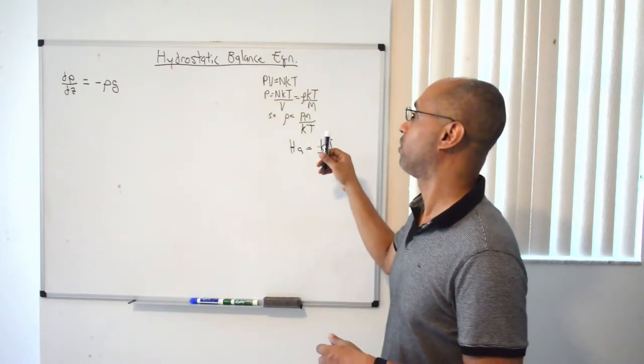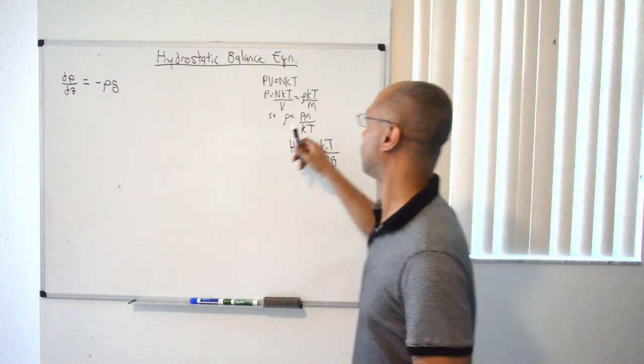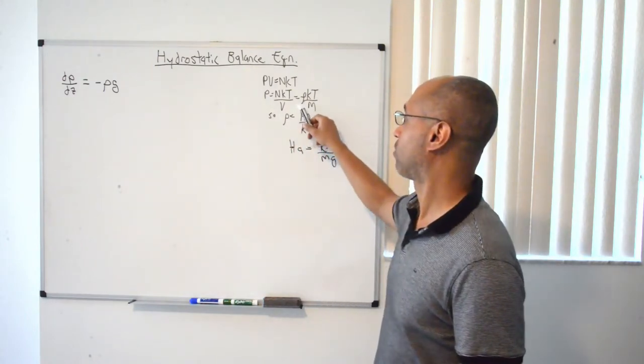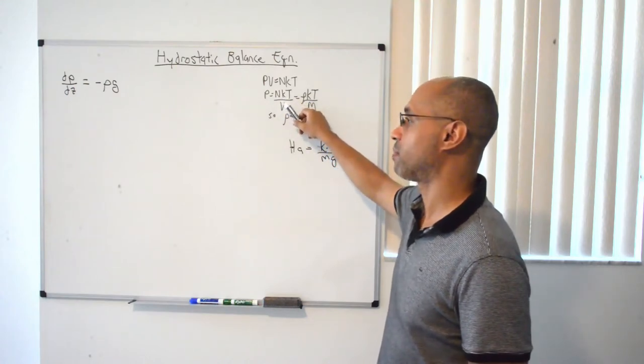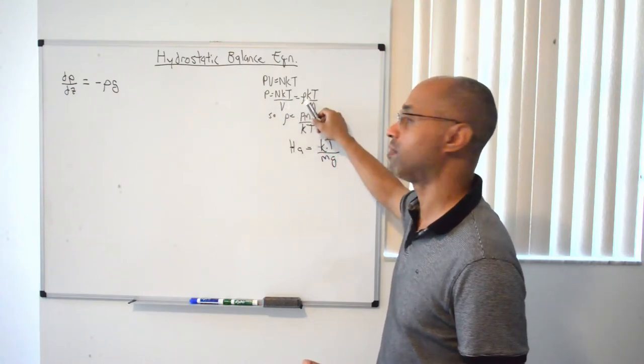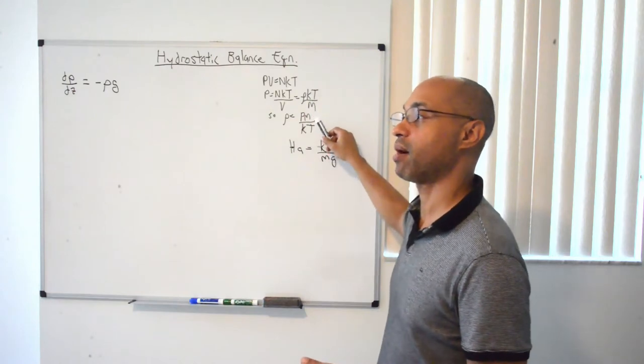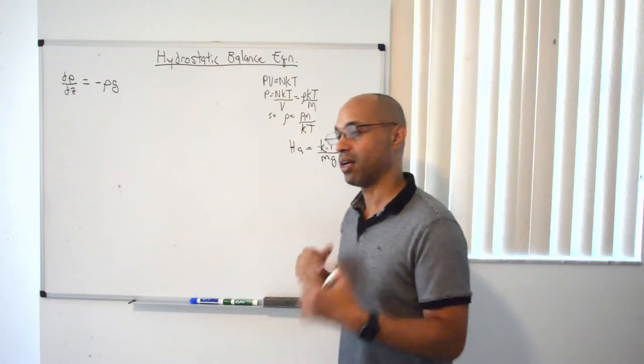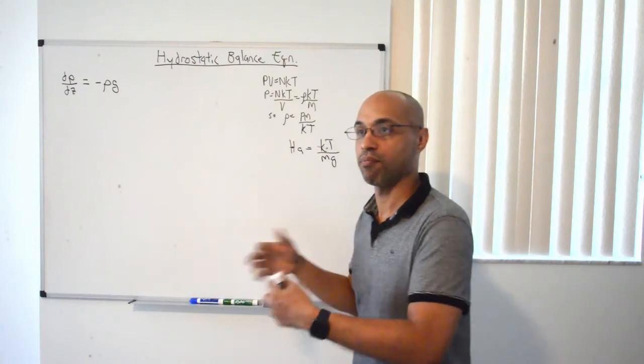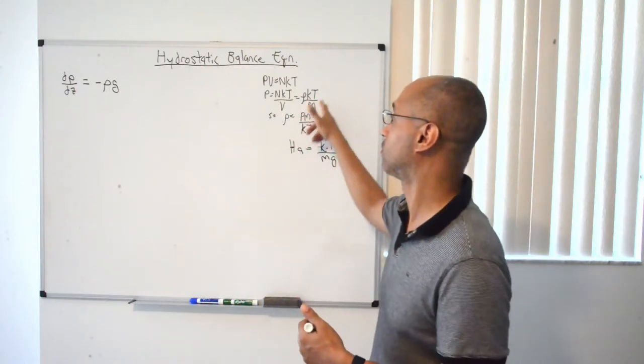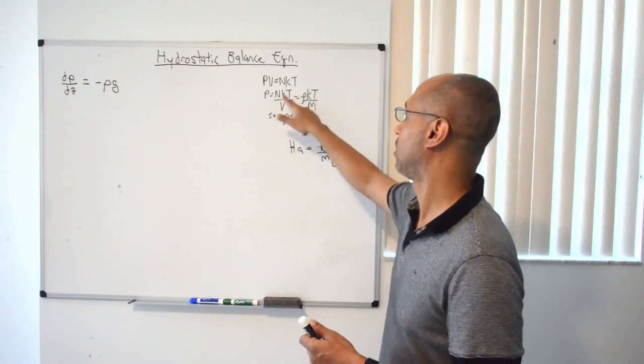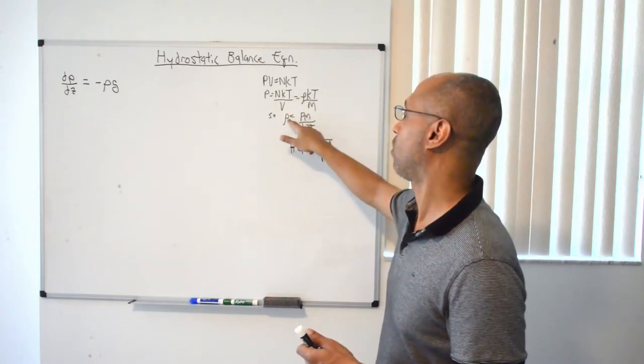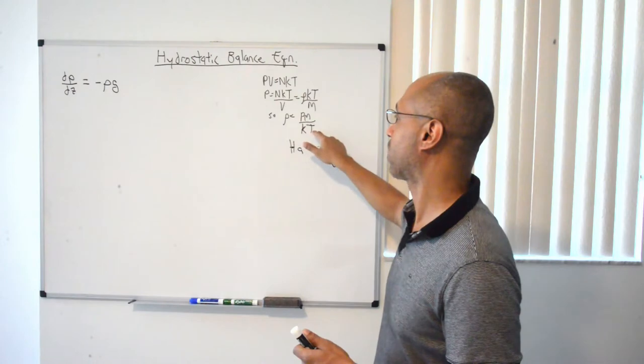So you have a number of particles per meter cubed. And what we want to do is get rid of that ρ expression. So we're going to get it in terms of pressure. So that n over v that I just mentioned, that's number of particles per meter cubed, is the same thing as the density divided by the mass. So it's kilograms per meter cubed divided by kilograms, and you get the particles per meter cubed. So this is what this is. You can rewrite this in terms of ρ, ρ in terms of pm over kt.